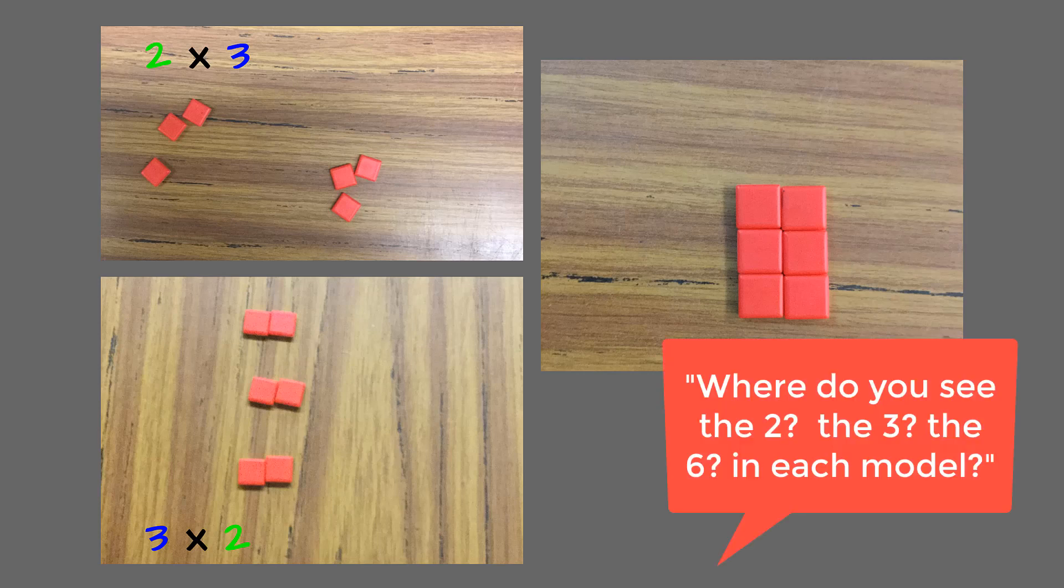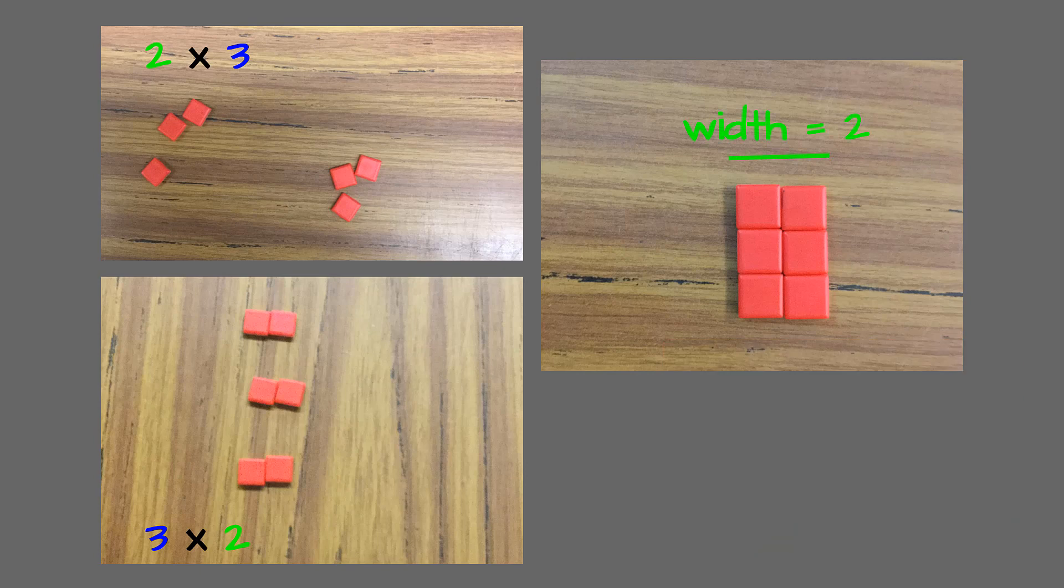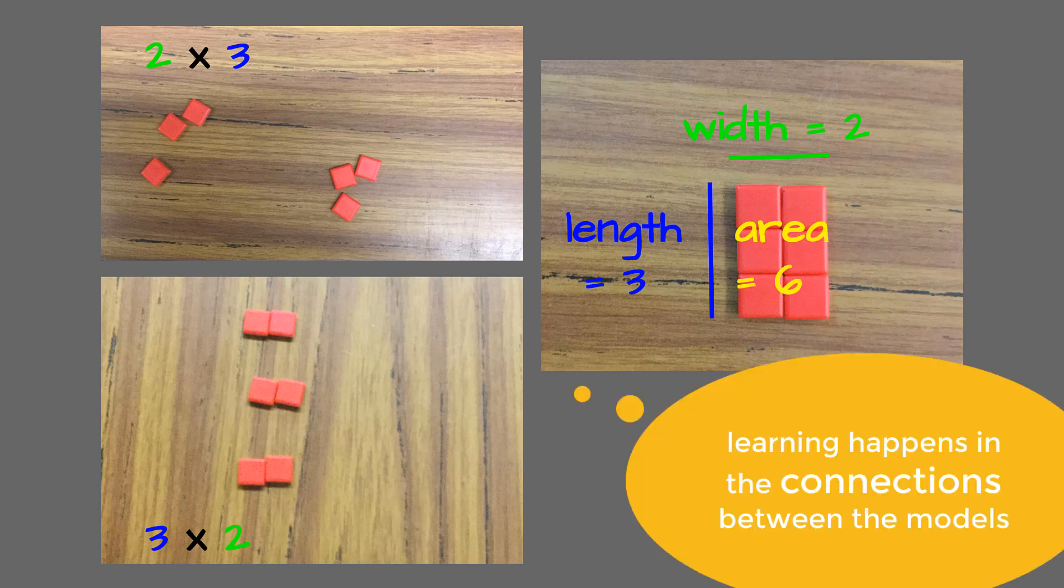And then we're going to ask students, where do you see the 2, the 3, and the 6 in all three of these models? And after some quiet think time and some turn and talk, students will say, we see a width of 2, a length of 3, and we can see an area of 6.